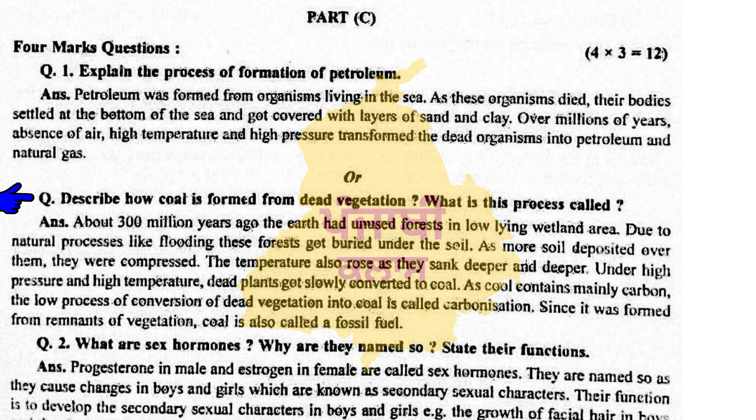Forests got buried under the soil. As more soil deposited over them, they were compressed. The temperature also rose as they sank deeper and deeper. Under high pressure and high temperature, dead plants got slowly converted to coal. As coal contains mainly carbon, the slow process of conversion of dead vegetation into coal is called carbonization. Since it was formed from the remains of vegetation, coal is also called a fossil fuel.